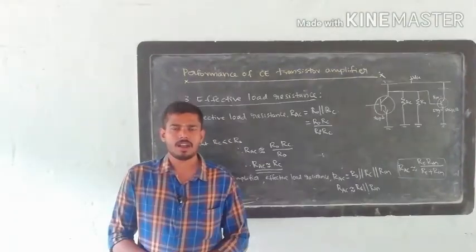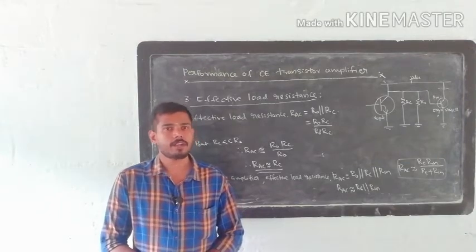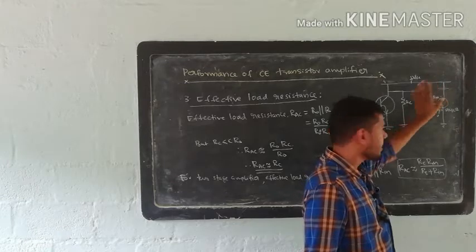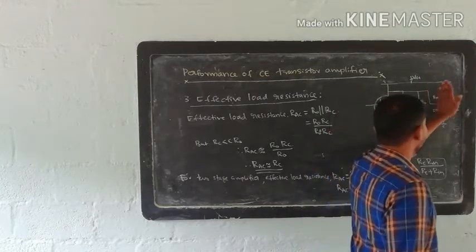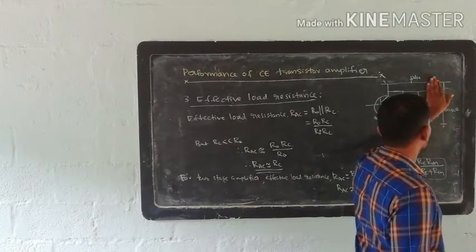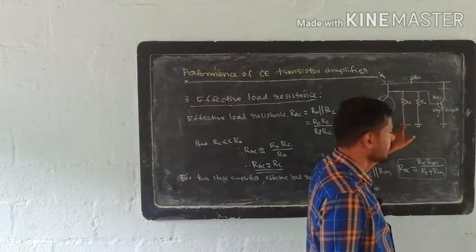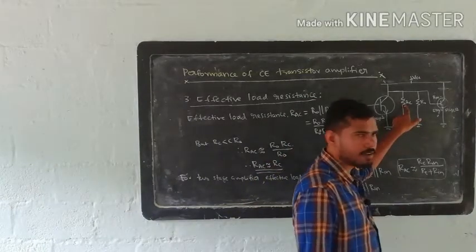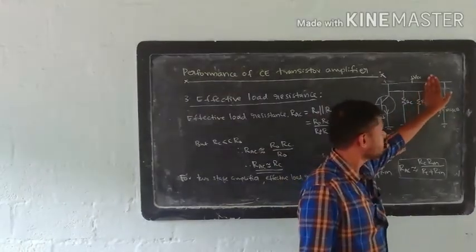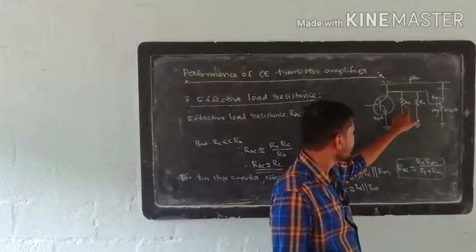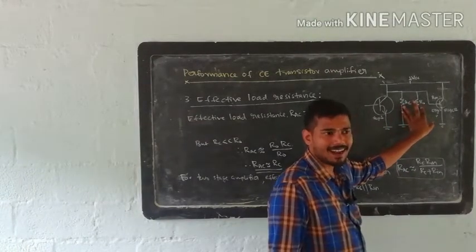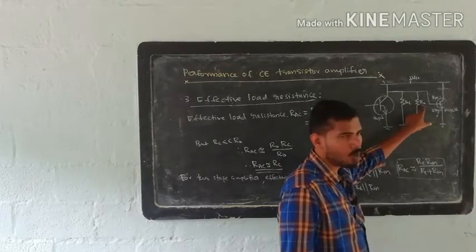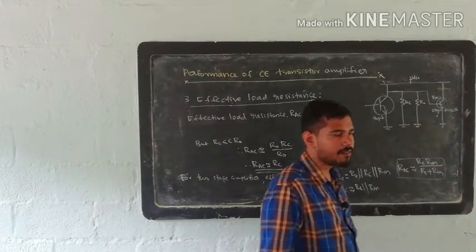The next performance factor is effective load resistance. In a single stage transistor amplifier, the output has a collector resistor RC and a load resistor RO. We connect a load resistor RO with the CE transistor configuration. RC is the collector resistor, RO is the load resistor, and they are in parallel.